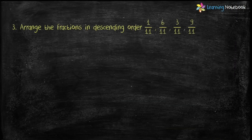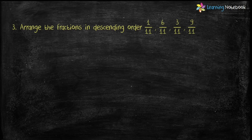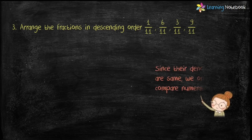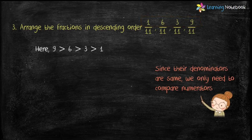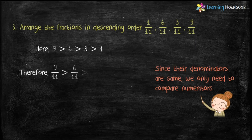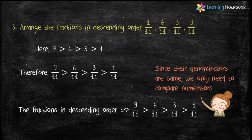Question number 3: arrange the given Fractions in descending order. Descending order means arranging from biggest to smallest. Their denominators are same, so we will compare their numerators. Here, 9 is greater than 6, which is greater than 3, and 3 is greater than 1. Therefore, Fractions in descending order are: 9 by 11 is greater than 6 by 11, which is greater than 3 by 11, and 3 by 11 is greater than 1 by 11.